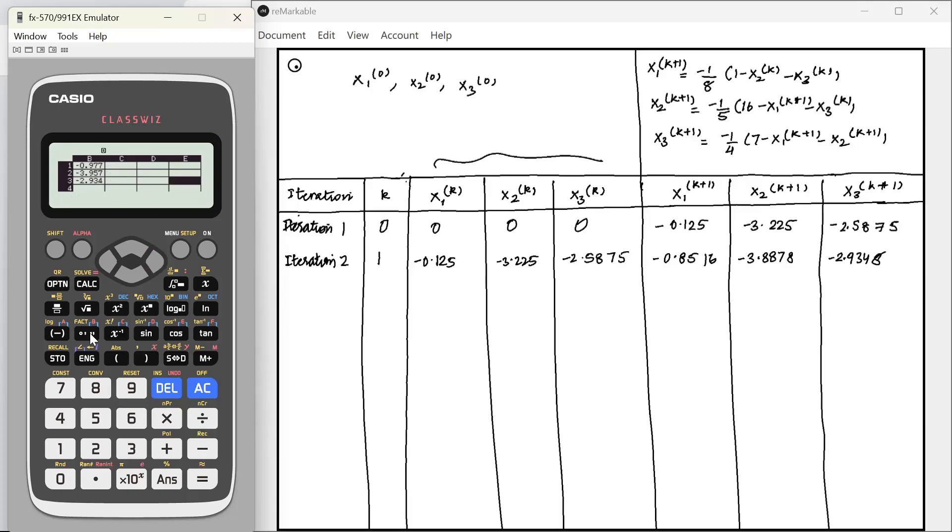Now let's move to iteration 3. Same process. Alpha B1, alpha B2, alpha B3. These are going to be the new values. Minus 0.9778, minus 3.9825, minus 2.99.